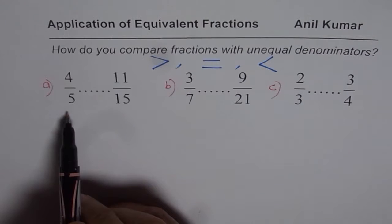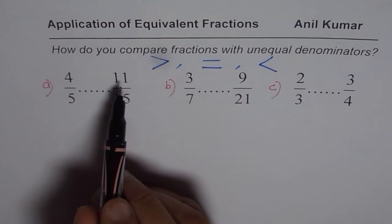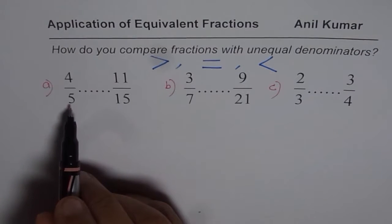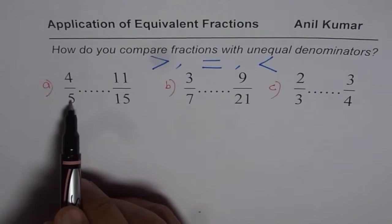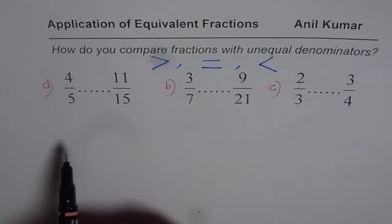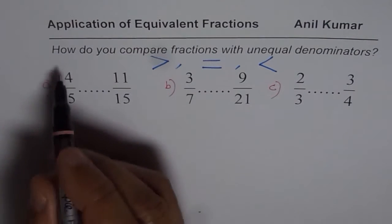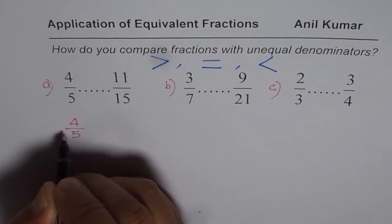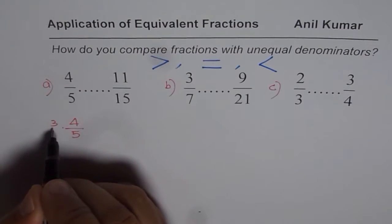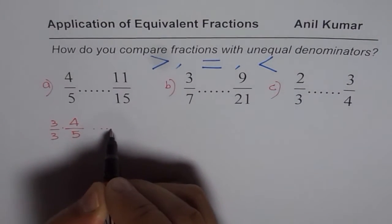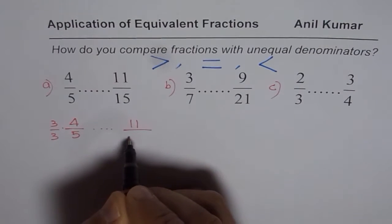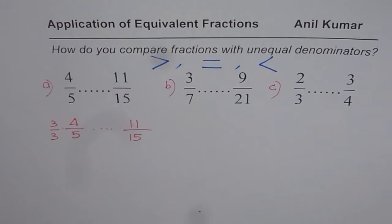The first example is 4 over 5 and 11 over 15 — two fractions to be compared. What denominator can we use that is the same? 5 times 3 is 15, so I can multiply both by 3. We write 4 over 5 times 3 over 3, and then check whether it is greater than, equal to, or less than 11 over 15.